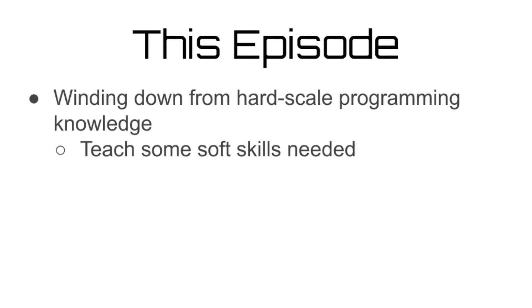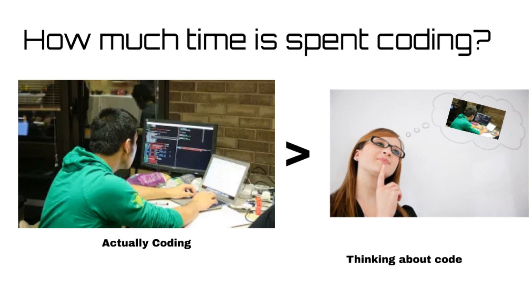As we wind down our Introduction to Programming series, we want to take some time and talk about some of the soft skills needed to be a successful computer scientist, since it's not all about writing code. In fact, many people in the industry of computer science will tell you that the majority of their job is spent thinking about code, rather than writing it.